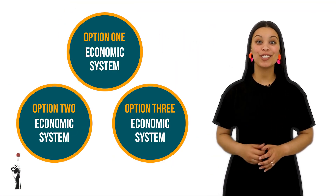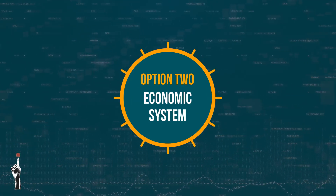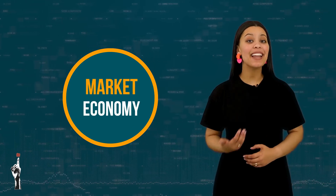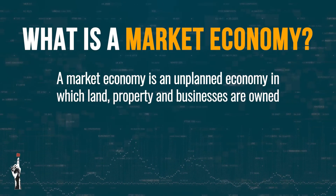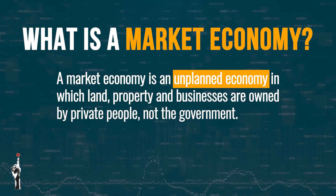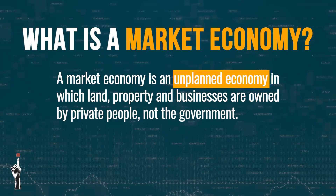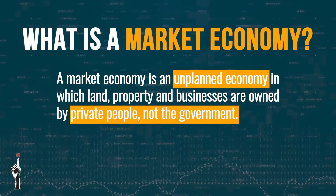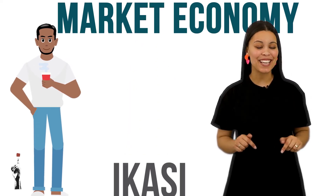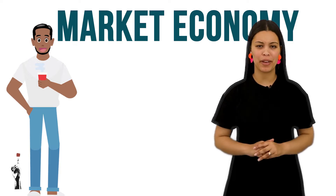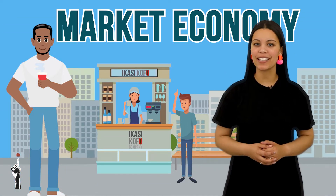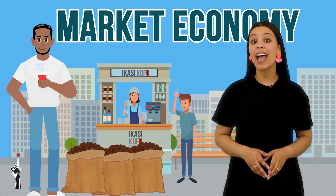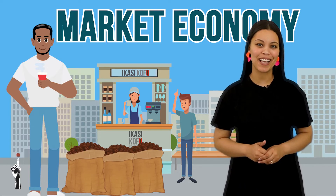Let's move on to our second economic system, which is called the market economy. Another name for this economy is capitalism. The market economy is considered an unplanned economy in which land, property and businesses are owned by private people and not the government. Do you remember Kangva from Ikasi Coffee Company? Kangva would decide on how many coffee beans he would like to buy and which type of coffee he would like to sell to his consumers.